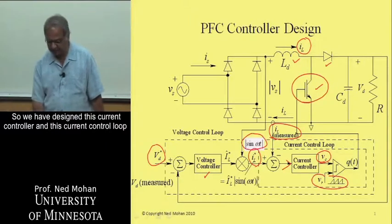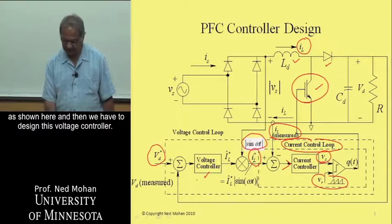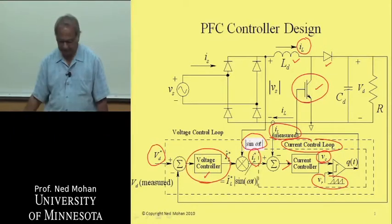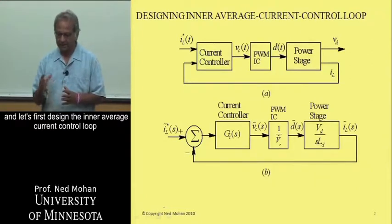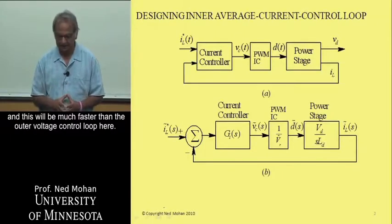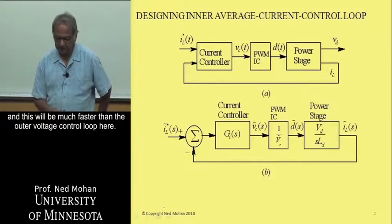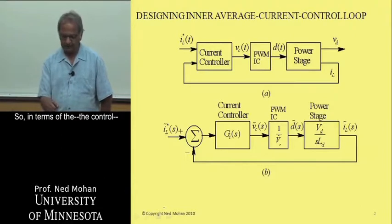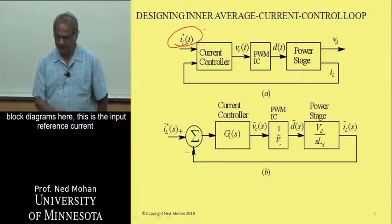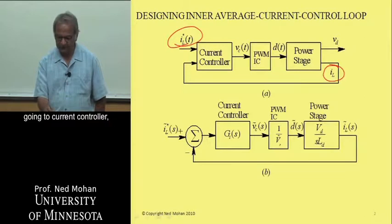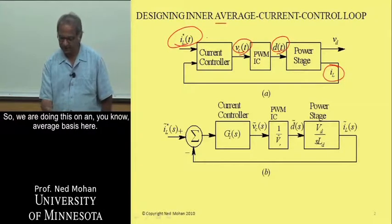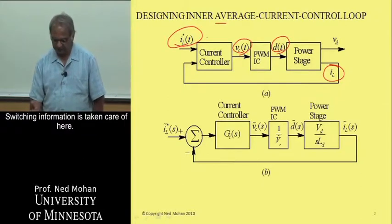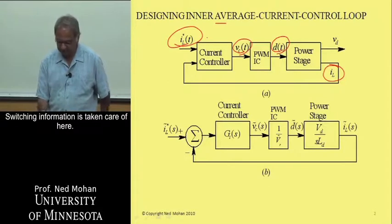We have to design the current controller in the inner current control loop, and then the voltage controller. In the control block diagram, the input reference current is compared with the actual current, going to the current controller, then the control voltage goes into the PWM IC, which determines the duty ratio, and then we have the power stage. We are doing this on an average basis.